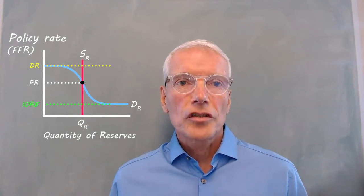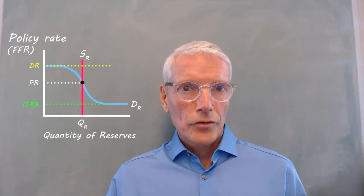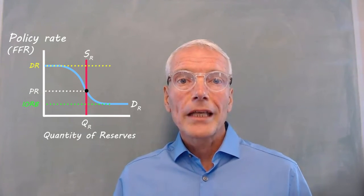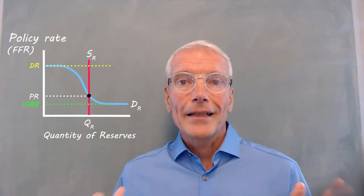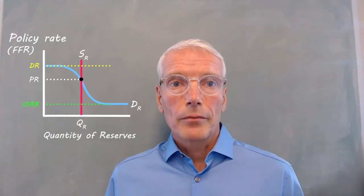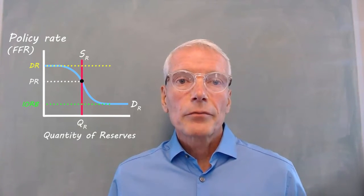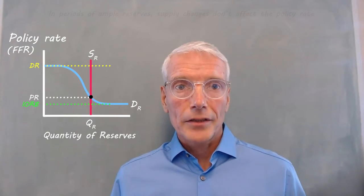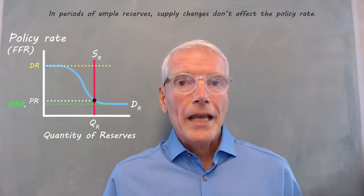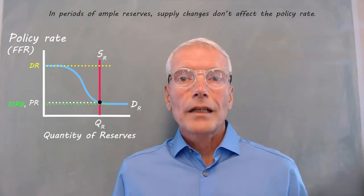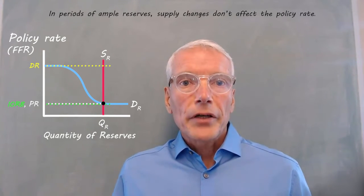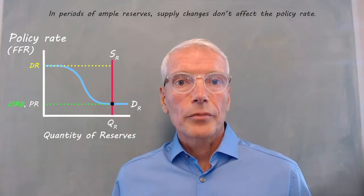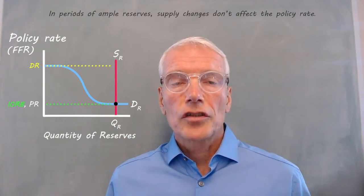If reserves are limited such that the supply is within the downward sloping section of the demand curve, an increase in the supply of reserves will lower the equilibrium policy rate, and a decrease in the supply of reserves will increase it. The central bank can simply use the supply of reserves as the lever with which to adjust the policy rate. But in periods of ample reserves, supply changes don't affect the policy rate — it takes something other than an increase or decrease in the supply of reserves to change the policy rate.